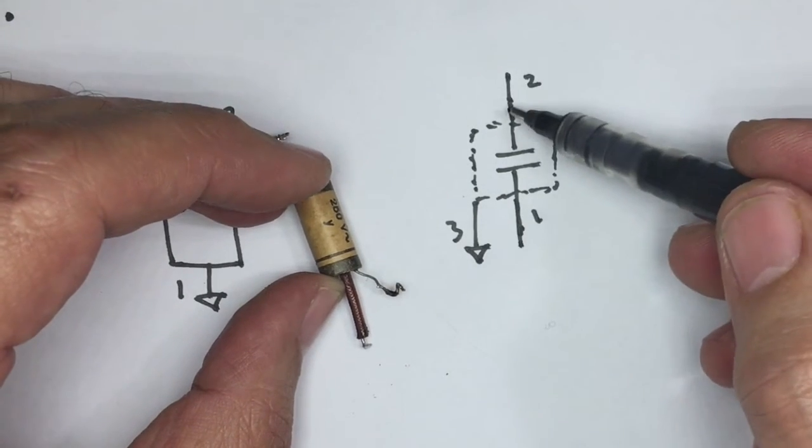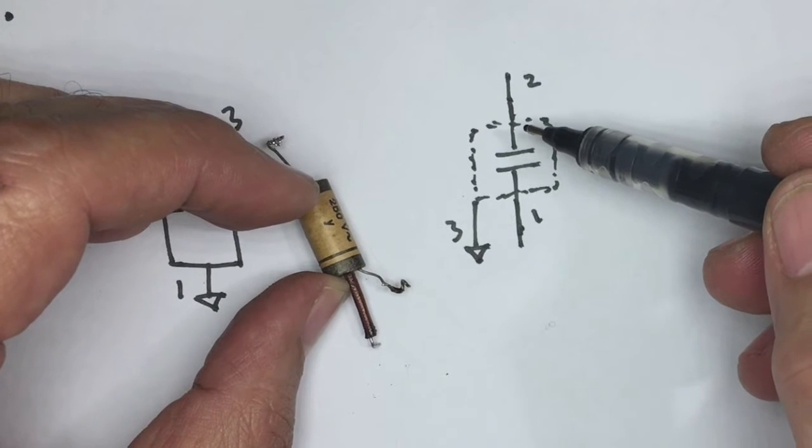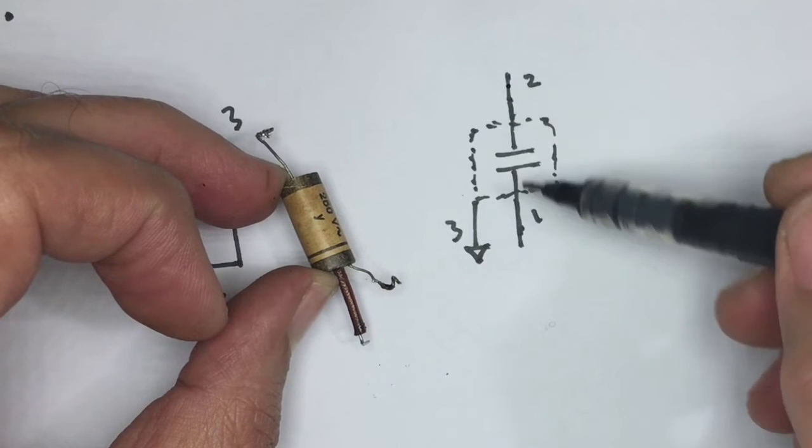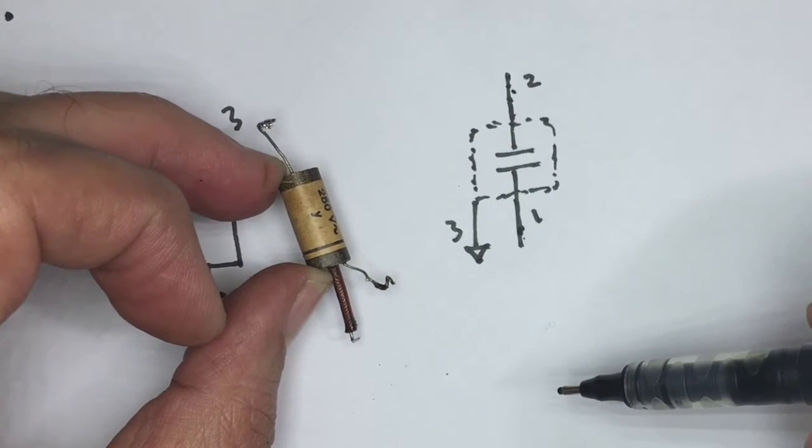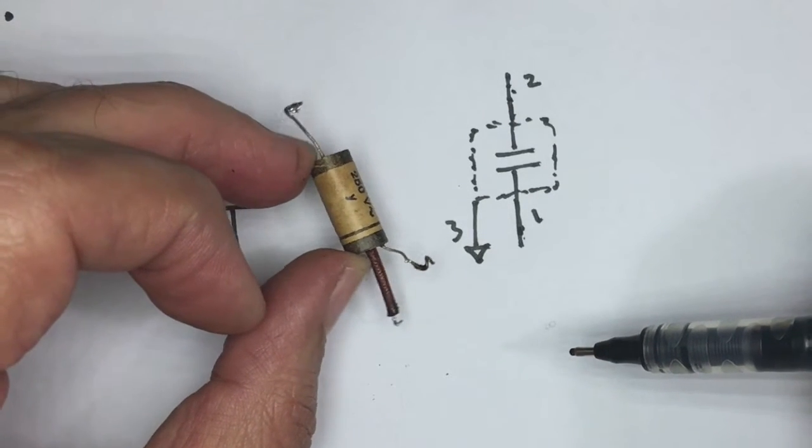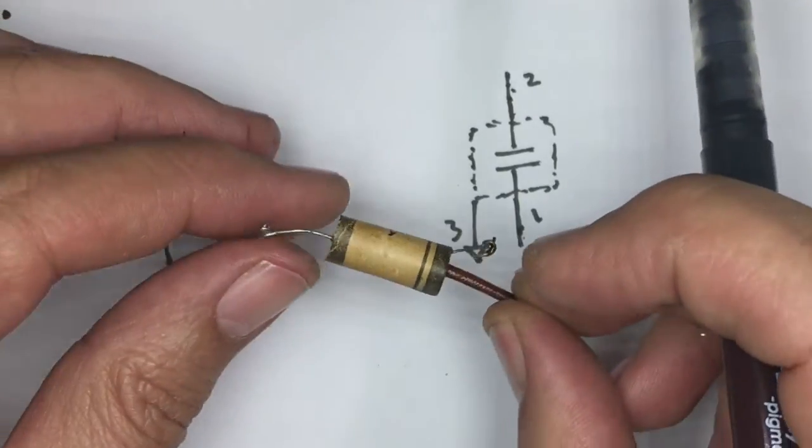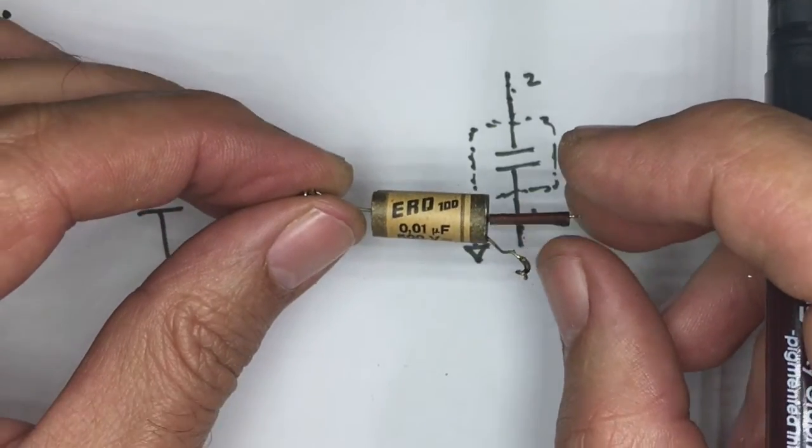So when you have a capacitor, for example, coupling the output of one tube stage to the input of the other tube stage, neither of these is actually grounded. The capacitor is not connected to ground in any way.